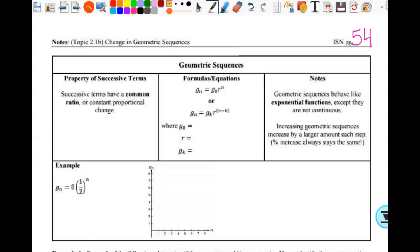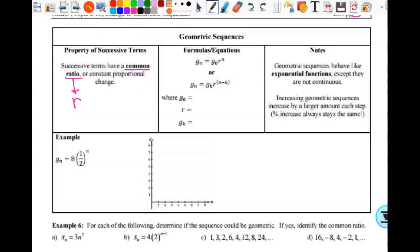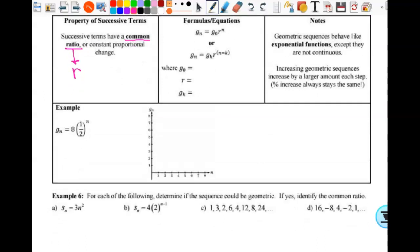Properties of successive terms for geometric sequences. Instead of having a common difference like arithmetic sequences do, they have a common ratio, which we represent with a lowercase r. So instead of increasing by a constant amount every time, the amount in which it's increasing changes. We have these two formulas here. If there's only one that you know, the second one is the best one to know because it'll kind of work for everything.